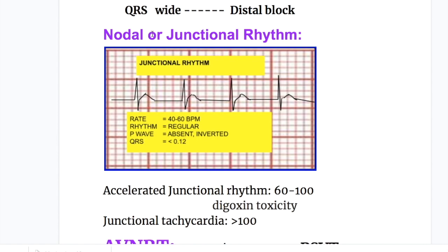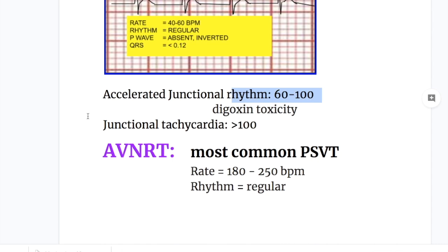There are different types of junctional rhythms: junctional rhythm, accelerated junctional rhythm, and junctional tachycardia. The only difference between these three types is the rate. Junctional rhythm has a rate of 40 to 60 beats per minute, accelerated junctional rhythm is 60 to 100 beats per minute, and junctional tachycardia is more than 100 beats per minute.